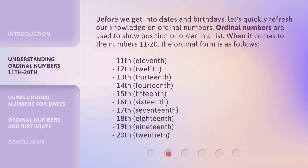Before we get into dates and birthdays, let's quickly refresh our knowledge on ordinal numbers. Ordinal numbers are used to show position or order in a list. When it comes to the numbers 11 to 20, the ordinal form is as follows: 11th, 12th, 13th, 14th, 15th, 16th.